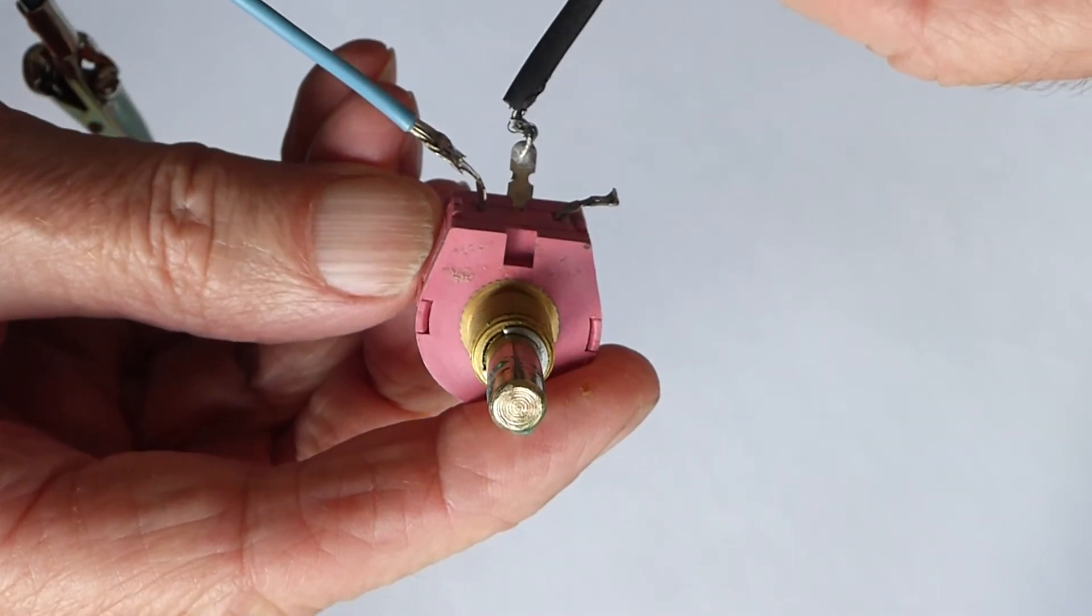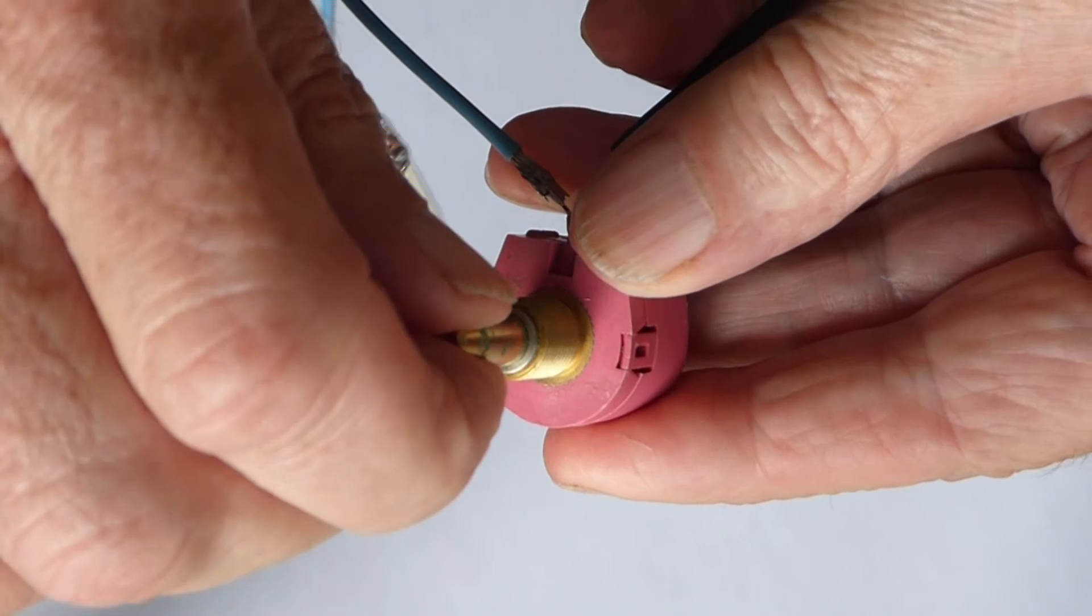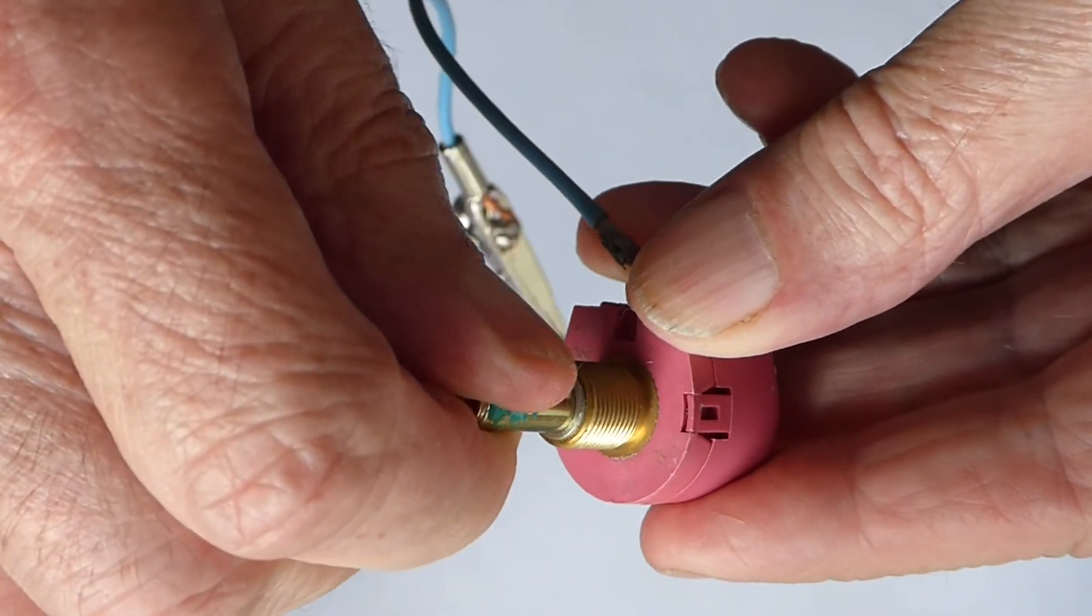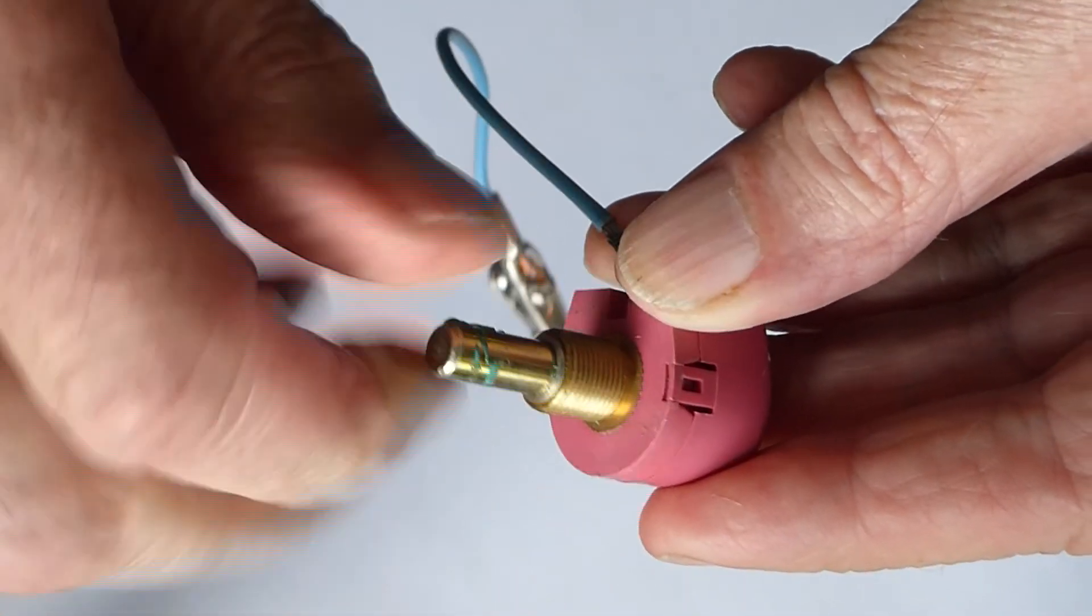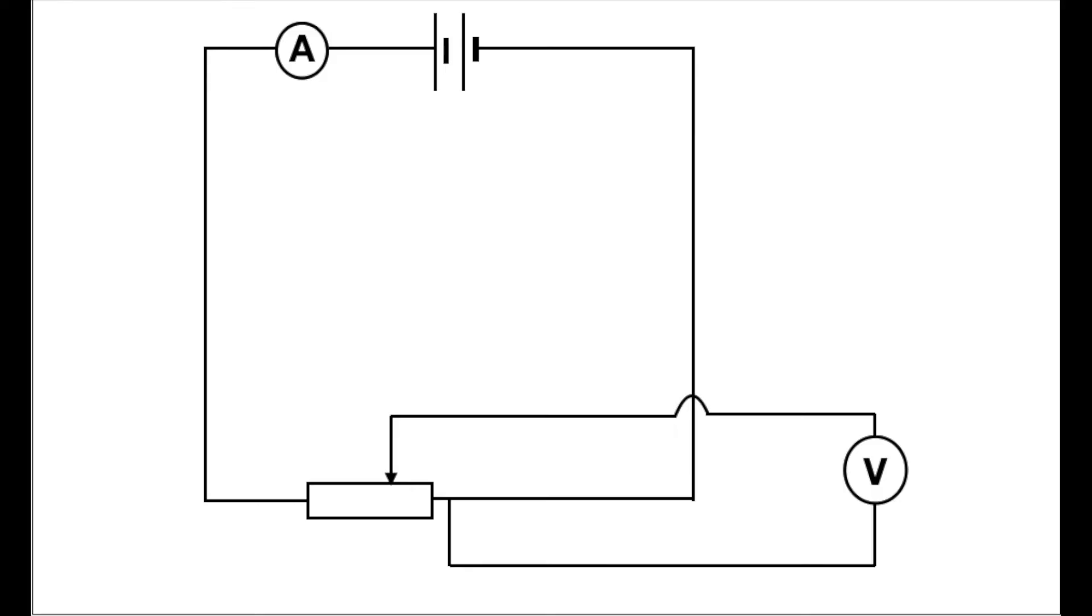And going back to a real potentiometer, that is exactly how it works. Inside there is a horseshoe shape of graphite and there is a sliding contact that goes backwards and forwards around it.